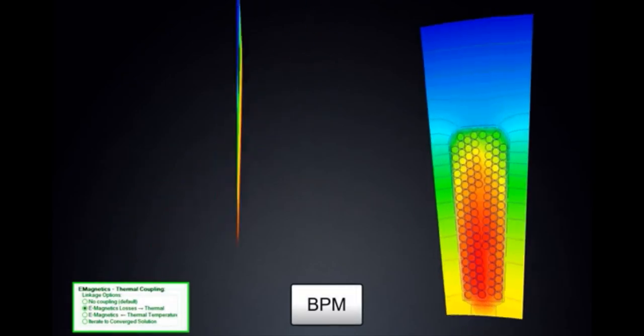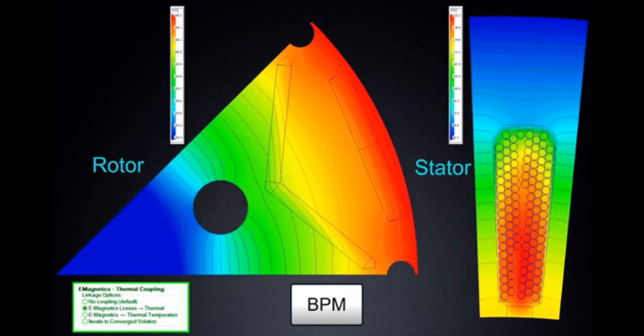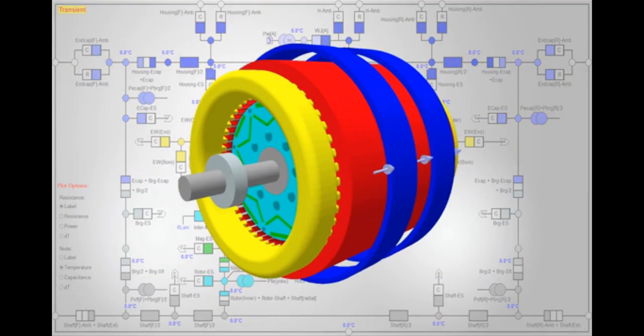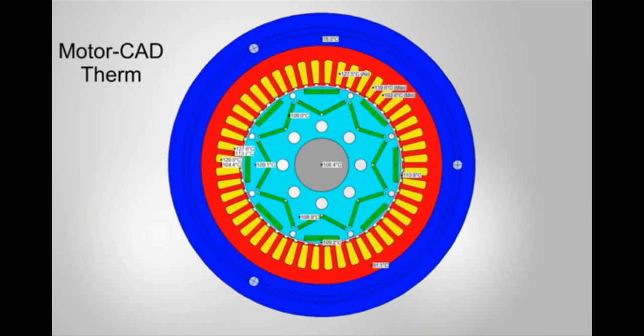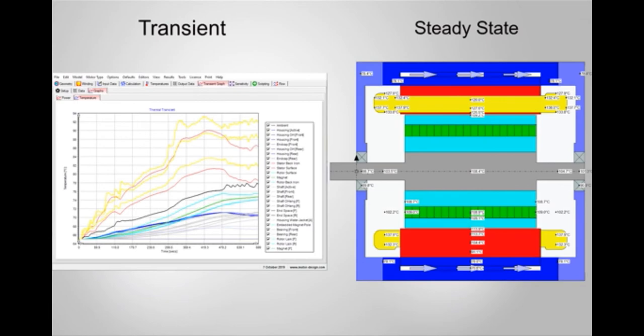The Electromagnetic model has a direct link to the thermal model for subsequent thermal analysis. MotorCAD automatically sets up a lump parameter thermal resistance and flow network based on the geometry, materials and cooling mechanism. The steady state and transient thermal analysis includes cooling of the end space, the effect of rotation on airflow and heat transfer in both the radial and axial direction.